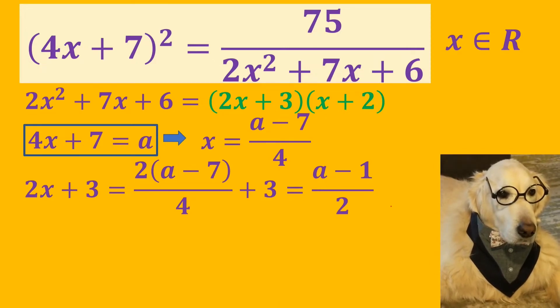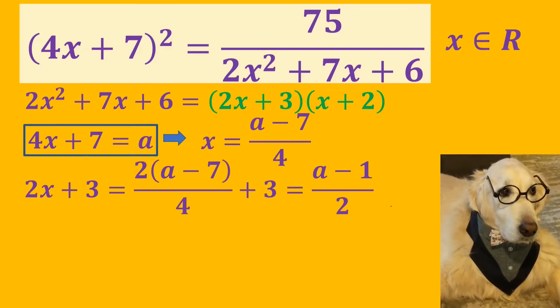Then we substitute x with (a - 7)/4 in 2x + 3, and we get (a - 1)/2.